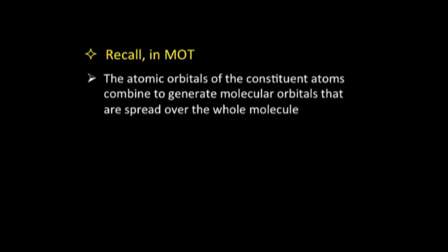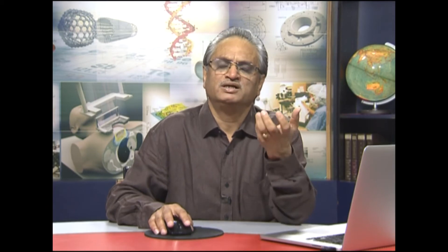In order to move further to heteronuclear diatomic molecules, it will be worthwhile to recall a few things. According to molecular orbital theory, what we basically do is we take the atomic orbitals of the constituent atoms which are going to combine together to make a molecule. The atomic orbitals combine together to generate molecular orbitals, and these molecular orbitals are delocalized over the whole molecule — that is the first and foremost premise of molecular orbital theory. These molecular orbitals are obtained by the linear combination of atomic orbitals, typically called the LCAO approximation.